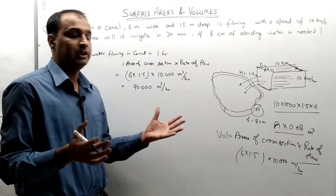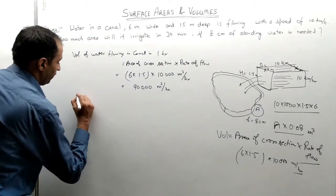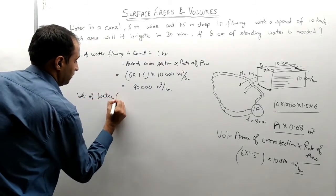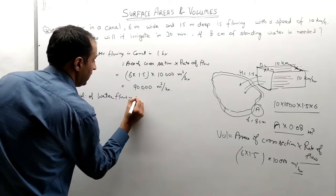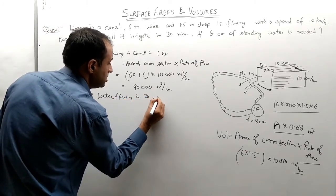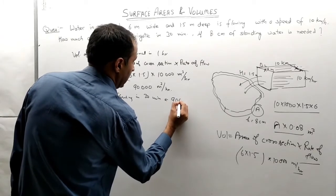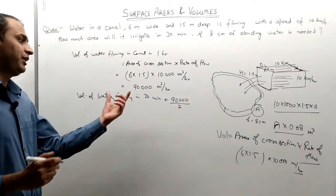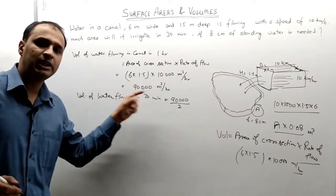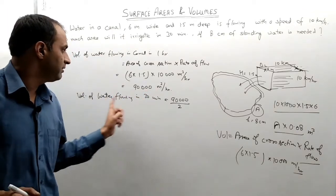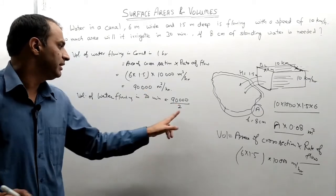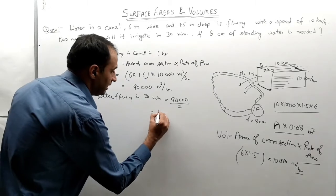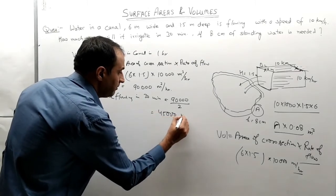In 1 hour, 90,000 meter cube flows. Since we have 30 minutes, the volume of water flowing in 30 minutes is equal to 90,000 divided by 2, which equals 45,000 meter cube.